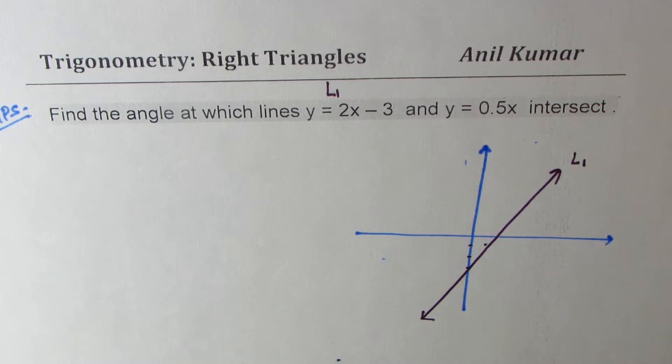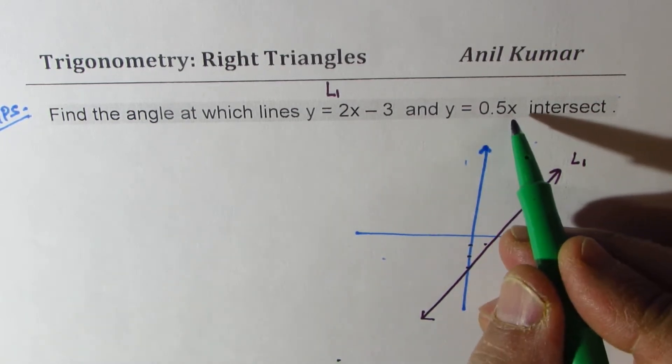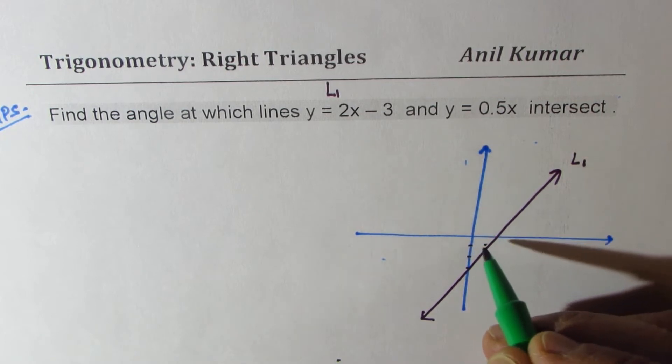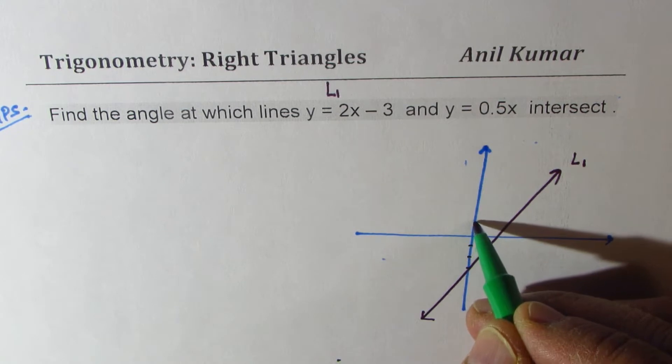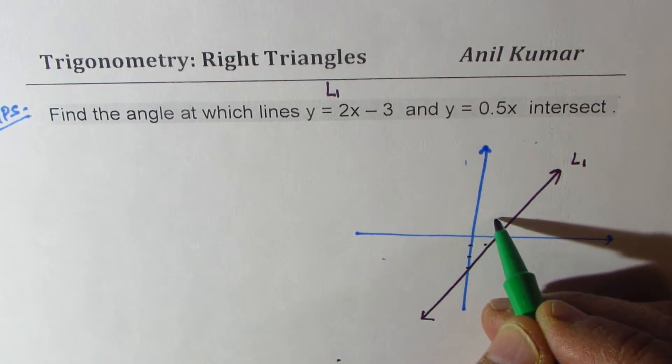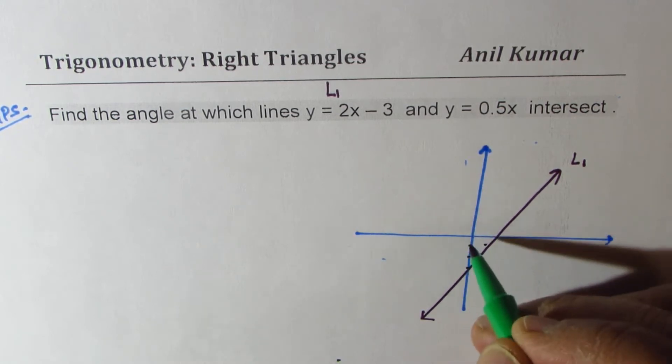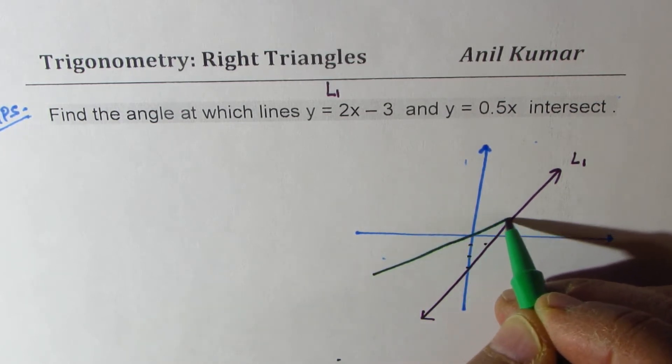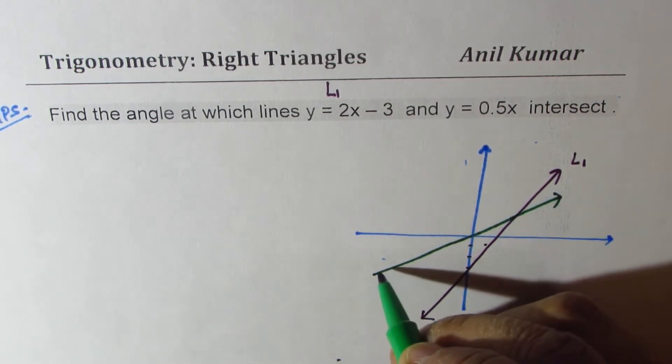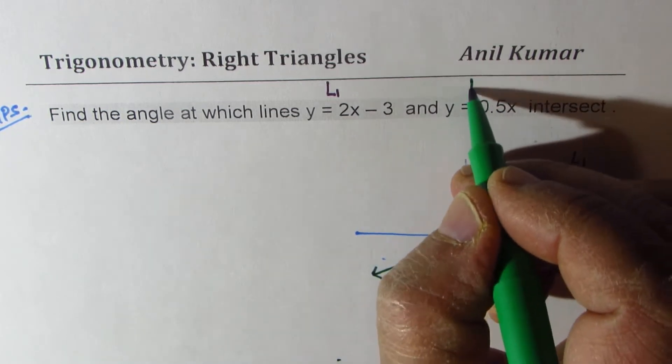Now the second line is half x, or you can say 1 over 2. So you rise 1 and go 2 units to this side and it goes from the origin. So we'll draw a line from the origin with a slope of half. So that is line 2.